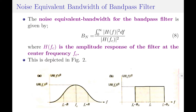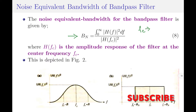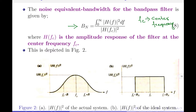Let us now find the noise equivalent bandwidth of a band pass filter. Please note, the only difference between a low pass filter and a band pass filter is the center frequency. In a low pass filter, the center frequency is 0, whereas in a band pass filter, the center frequency is fc. Therefore, the noise equivalent bandwidth of the band pass filter is directly given by Bn = ∫₀^∞ |H(f)|² df / |H(fc)|², where fc is the center frequency of the band pass filter.